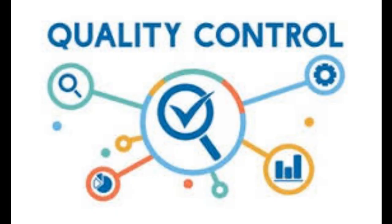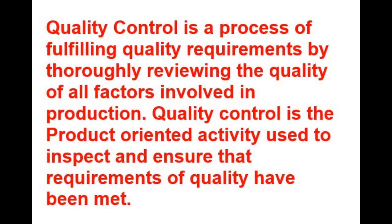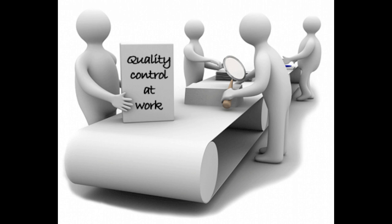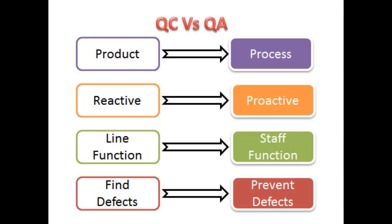According to ISO 9000, quality control is a process of fulfilling quality requirements by thoroughly reviewing the quality of all factors involved in production. Quality control is a product-oriented activity used to inspect and ensure that requirements of quality have been met. Quality control is an activity that focuses on detecting issues and correcting them. The main goal of quality control is to fix defects after first identifying them. Quality control is a corrective technique and reactive measure.